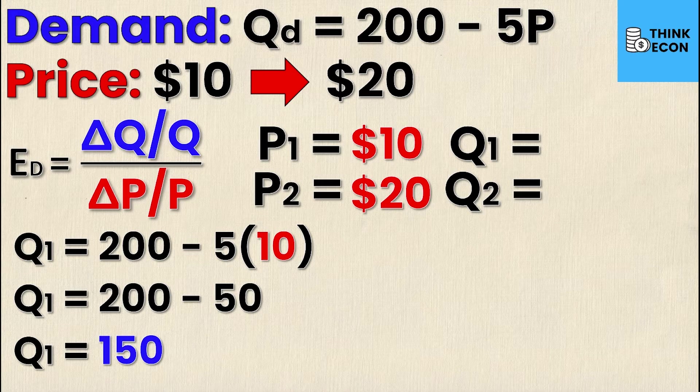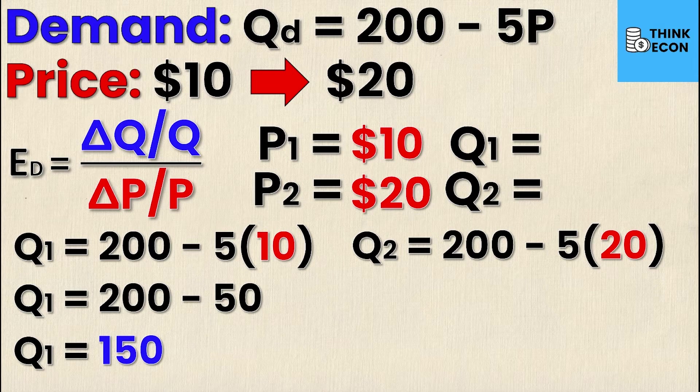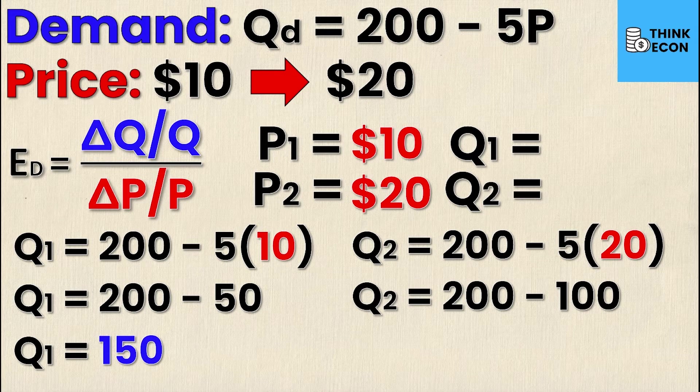We'll do the same thing for Q2. Q2 equals 200 minus 5 times 20. 20 is just P2. Simplifying further we get Q2 equals 200 minus 100, and then finally we can derive that Q2 must equal 100.